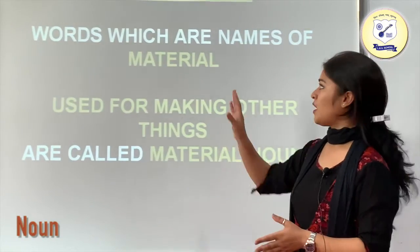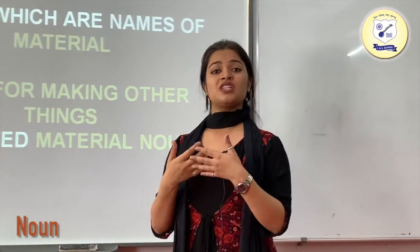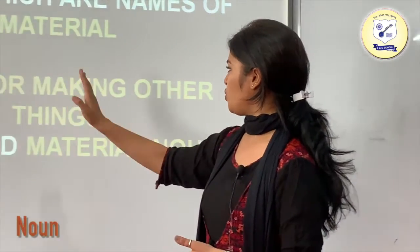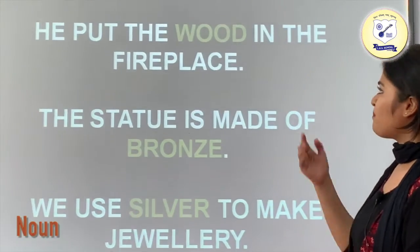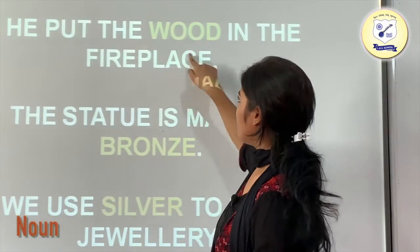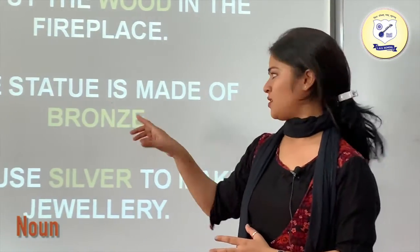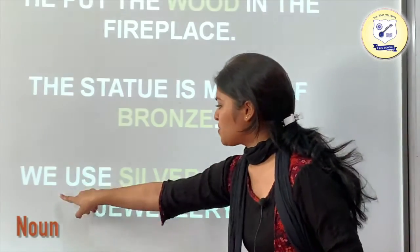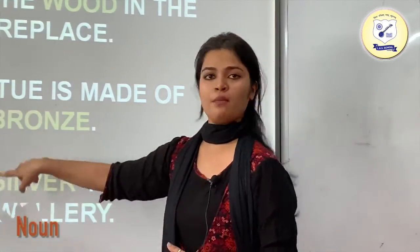Now material nouns. Words which are names of materials — things which other things are made from — are called material nouns. For example, furniture is made of wood, jewellery is made of silver or gold. Examples: He put the wood in the fireplace — wood is the material noun. The statue is made of bronze — bronze is the material noun. We use silver to make jewellery — silver is the material noun.